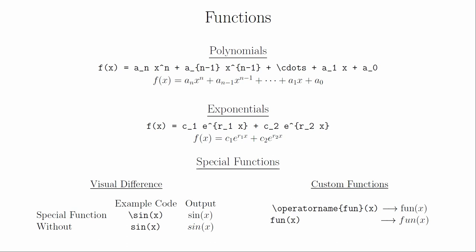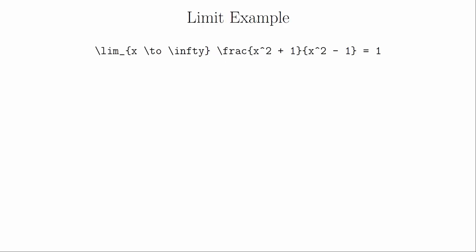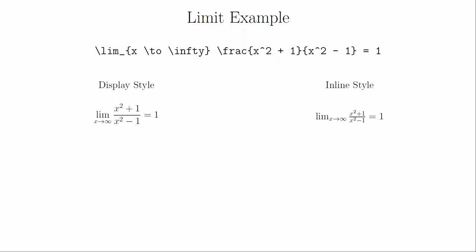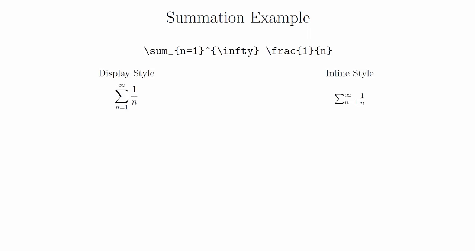LaTeX has most of the special functions that you will ever need. If you're not sure if the one you need exists, just try typing backslash followed by your best guess. And if you ever needed to create a custom function, you can use operatorname to create those upright characters. Let's look at the code for the evaluation of a limit. The lim creates the limit notation, \to makes the right arrow, and \infty makes the infinity symbol. The underscore is telling LaTeX that you want this bracketed part typeset lower on the line. In display style, the variable of the limit is typeset beneath the lim, whereas in inline mode it appears to the side.